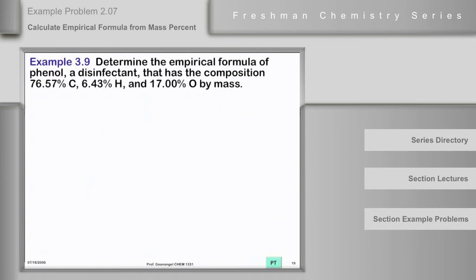We have phenol, a disinfectant, and the disinfectant has the mass percent composition 76.57% carbon, 6.43% hydrogen, 17% oxygen by mass. Determine its empirical formula.